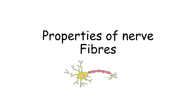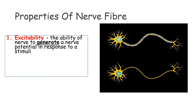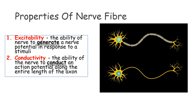The two key properties of nerve fiber are excitability and conductivity. Excitability refers to the ability of the nerve to generate an action potential, whereas conductivity refers to the ability of the nerve to conduct an action potential along the entire length of the axon.